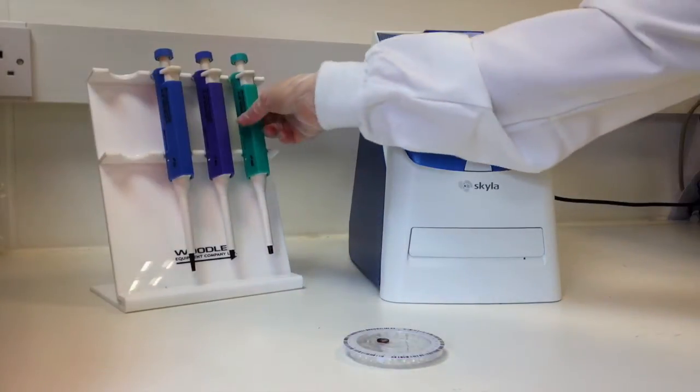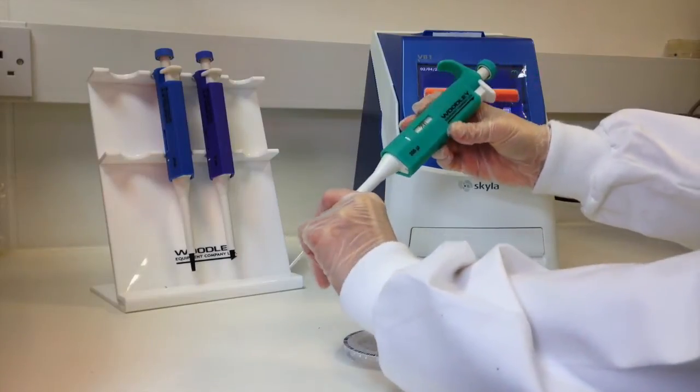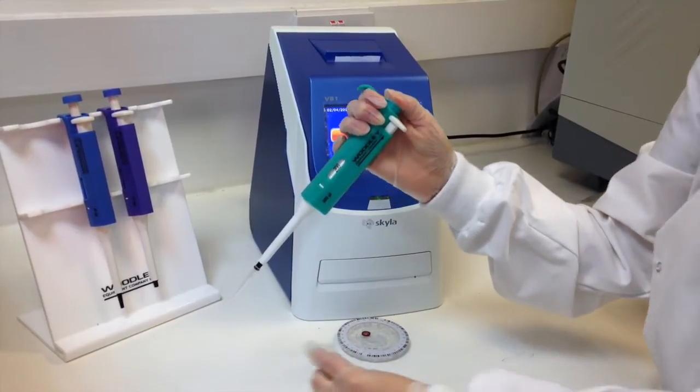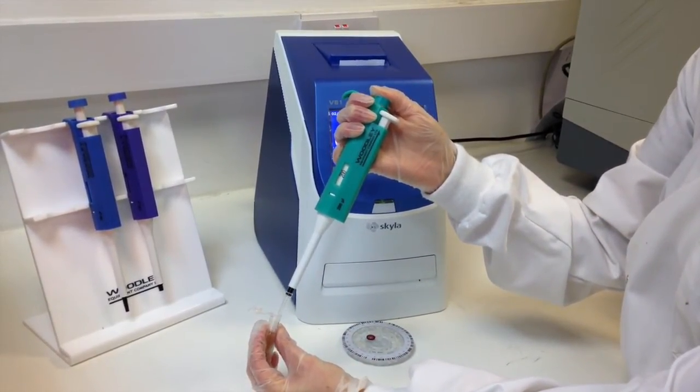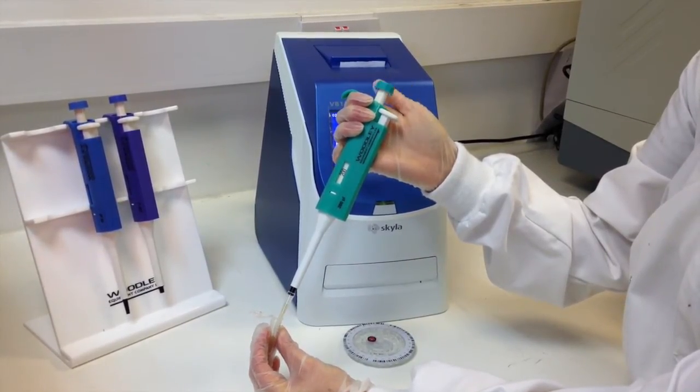Attach a new pipette tip to the end of the 200 microliter pipette provided. Do not touch the end of the tip. Using your thumb, push down the plunger to the stop position. Immerse the pipette tip below the surface of the sample and slowly release the plunger to draw up the sample. Avoid drawing in any air as this will cause the rotor to fail.